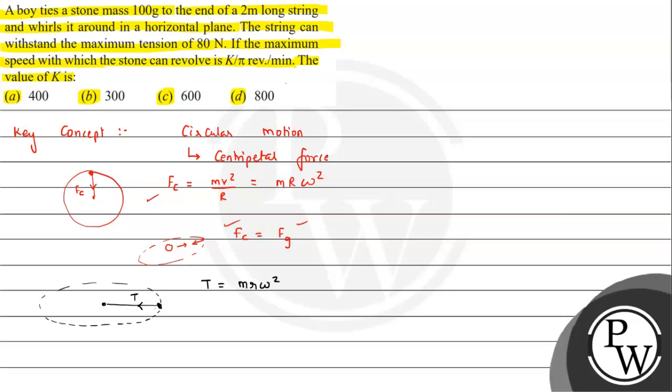Here we can see, this will be the maximum tension, that is T max equals mr omega square. And from here, we can say omega square value will be: T max is 80 N, divided by m, given as 100 gram, that is 0.1 kg. 10 raised to minus 3, we just multiply it.